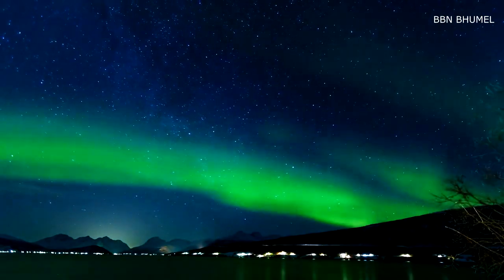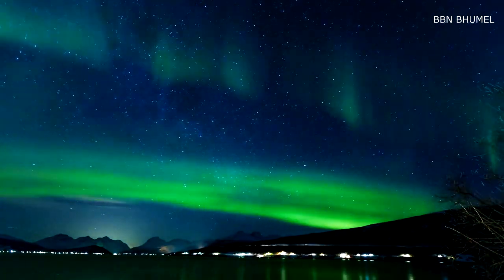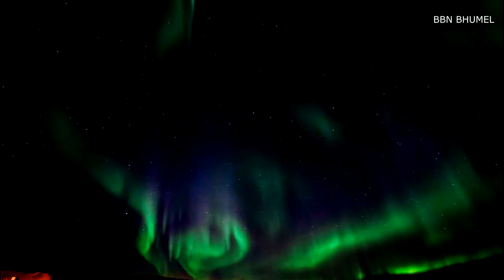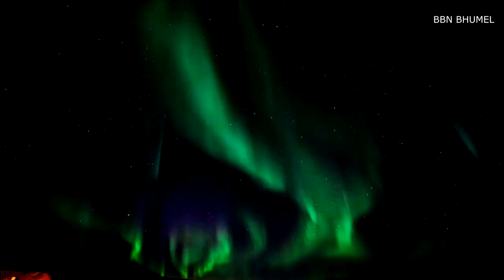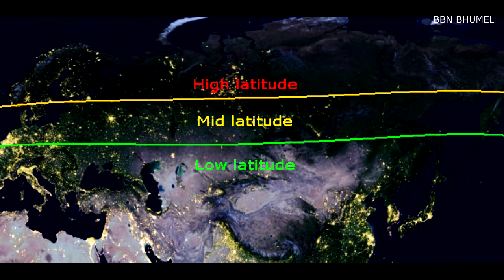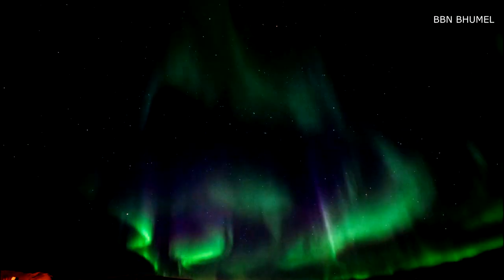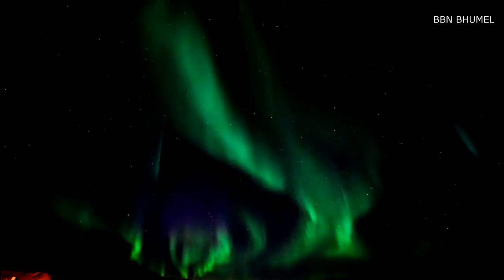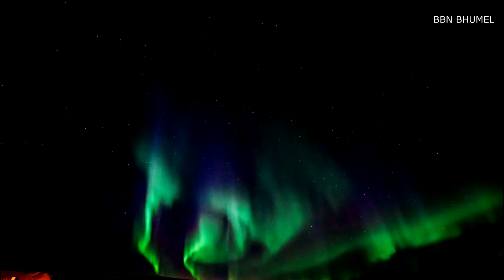An aurora, also known as the polar lights or aurora polaris, is a natural light display in Earth's sky. Predominantly seen in high-latitude regions, auroras display dynamic patterns of brilliant lights that appear as curtains, rays, spirals, or dynamic flickers covering the entire sky.